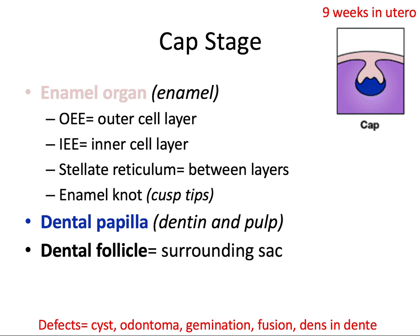Next we have the cap stage and this happens nine weeks in utero. The cap stage is also known as proliferation, and it's when the bud continues to grow and proliferate while also differentiating into some new layers. Each dental placode grows and indents in the budding process to form the enamel organ, which will ultimately create the enamel. The enamel organ consists of several very important layers to remember: the first is the OEE or outer enamel epithelium, which is the outer cell layer.